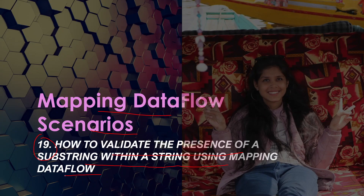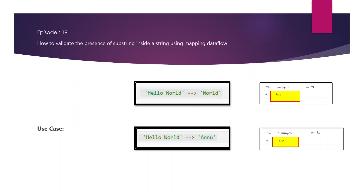Let's see our requirement in detail. As you can see in the image, we have to check if a particular substring is present as part of a string. Since 'world' is a part of 'hello world', it should return true. And since 'anu' is not a part of 'hello world', it should return false. This is the requirement we have to achieve using mapping dataflow.